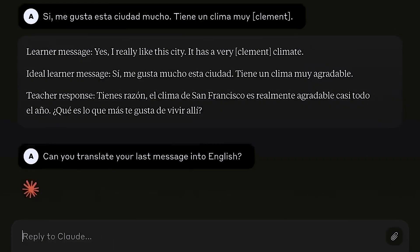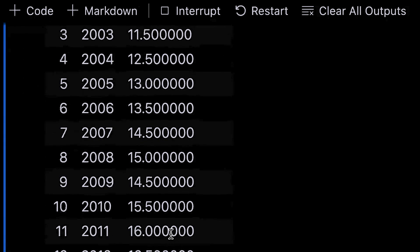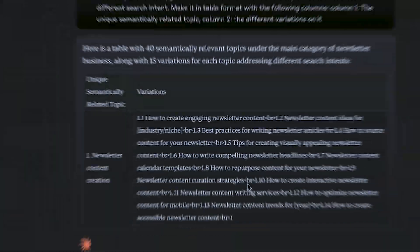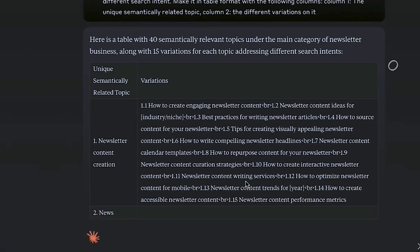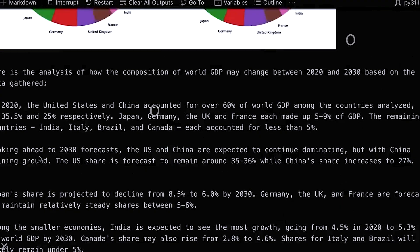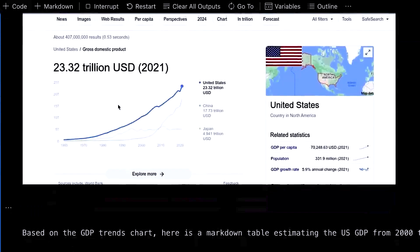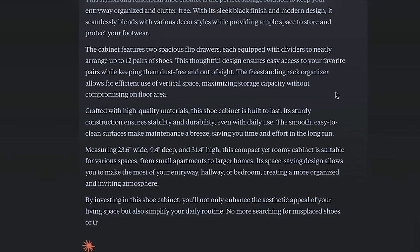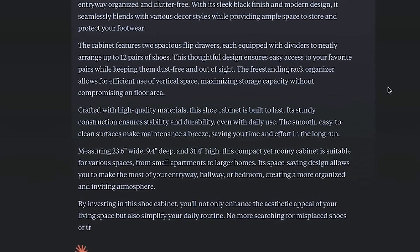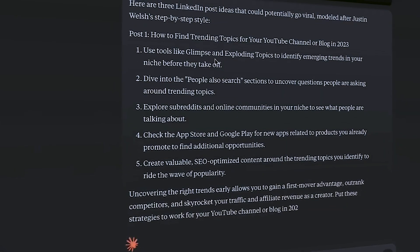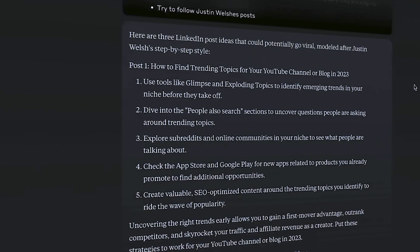One area where Opus truly shines is its innovative vision capabilities. Unlike its predecessors, Opus can process diverse visual formats, including photographs, charts, graphs, and technical diagrams, making it an indispensable asset for enterprises with knowledge bases encoded in different formats.